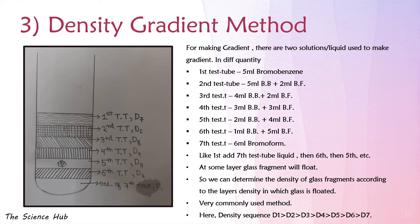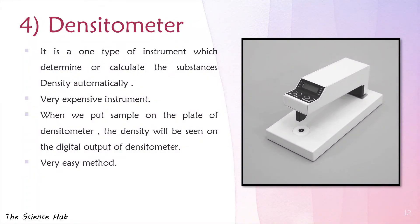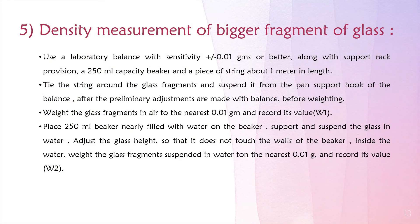The densitometer is an instrument that determines or calculates substance density automatically. It is a very expensive instrument. When we place a sample on the plate of a densitometer, the density is shown on the digital output. It is a very easy method.